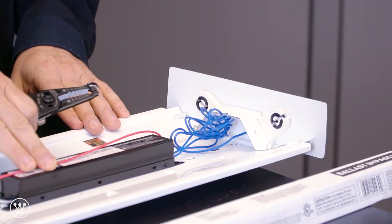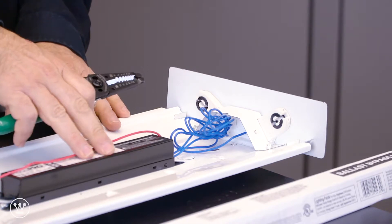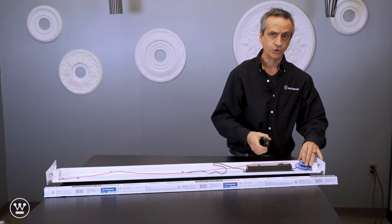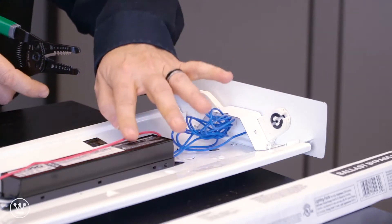Since this is a ballast bypass wiring configuration, first thing we need to do is remove the ballast. First thing we want to do is cut the wires coming out of the ballast. In this case, are the blue and the red.